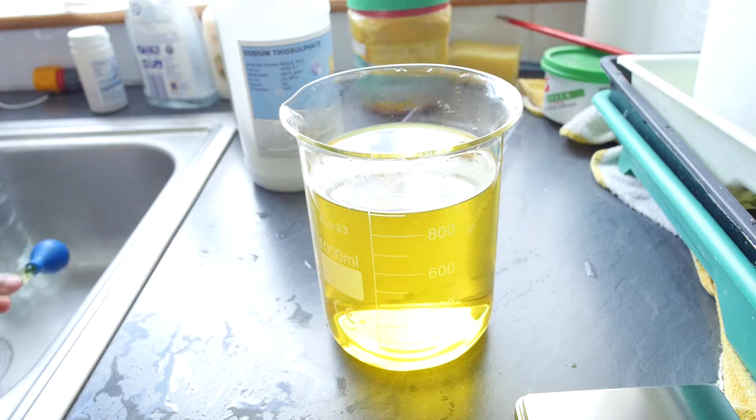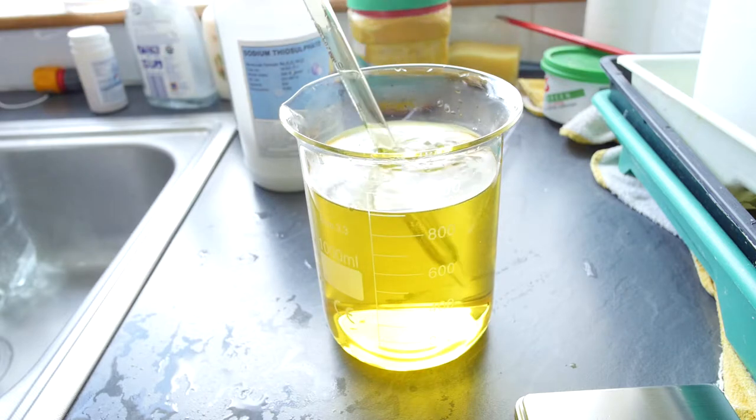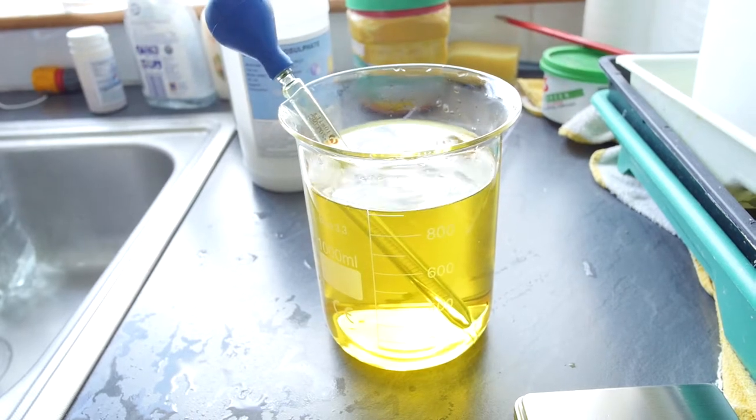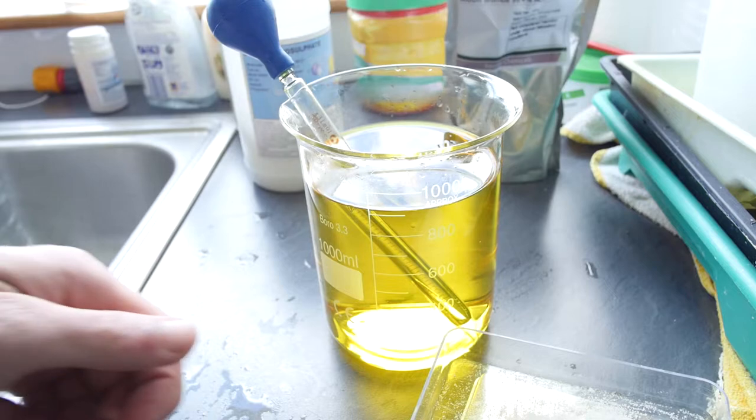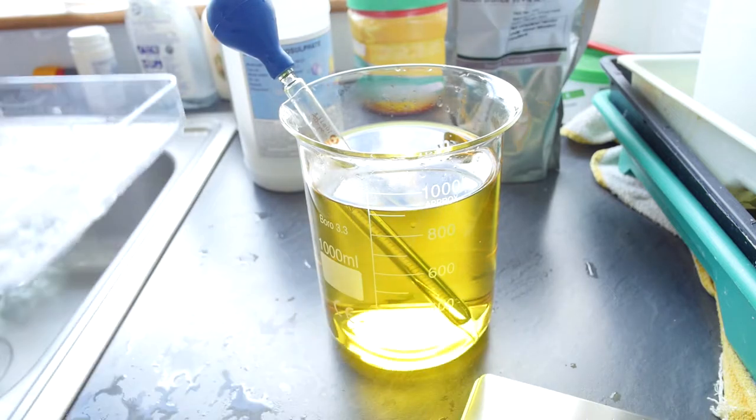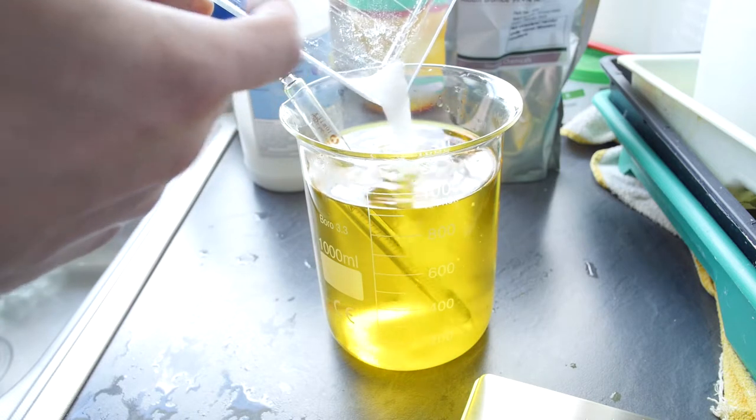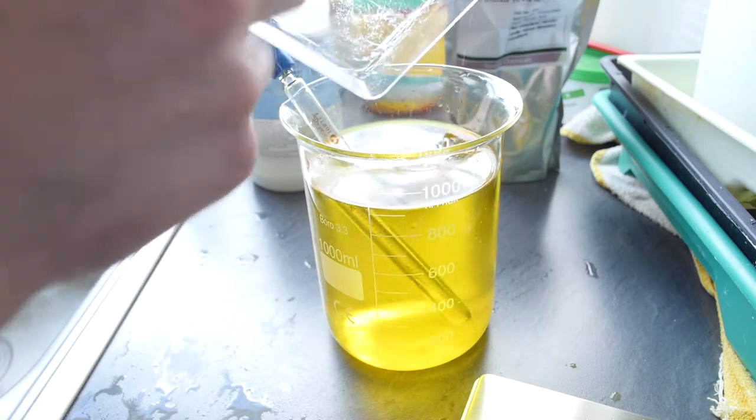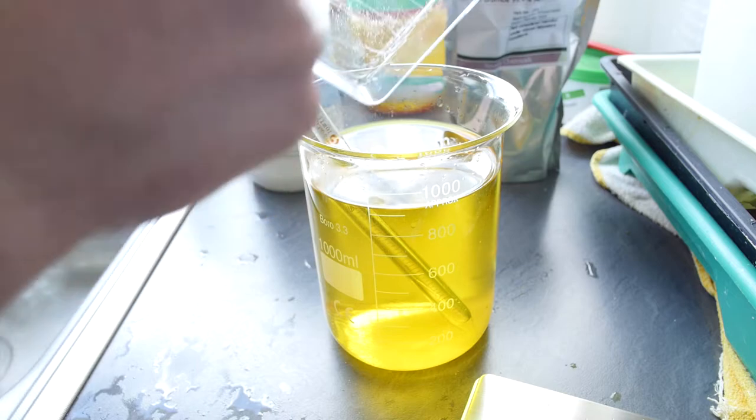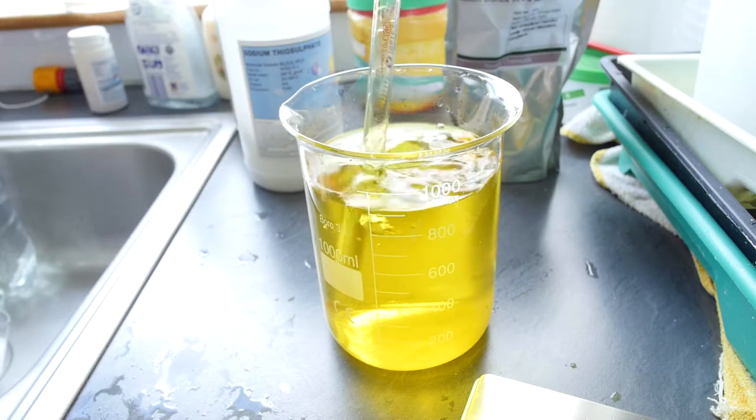Once that's all mixed, you'll notice that the solution will turn yellow. But we've still got another ingredient to add - 25 grams of sodium bromide. Then just mix it all together.